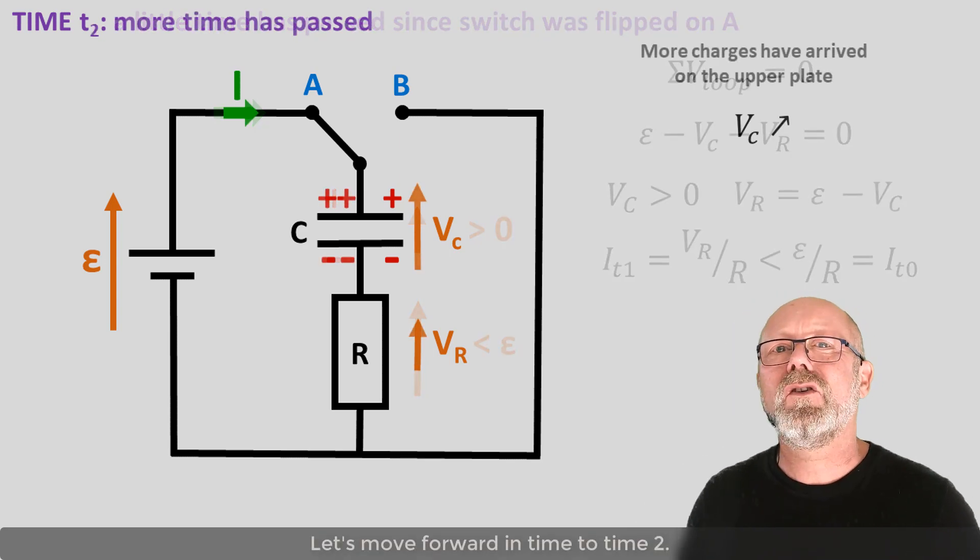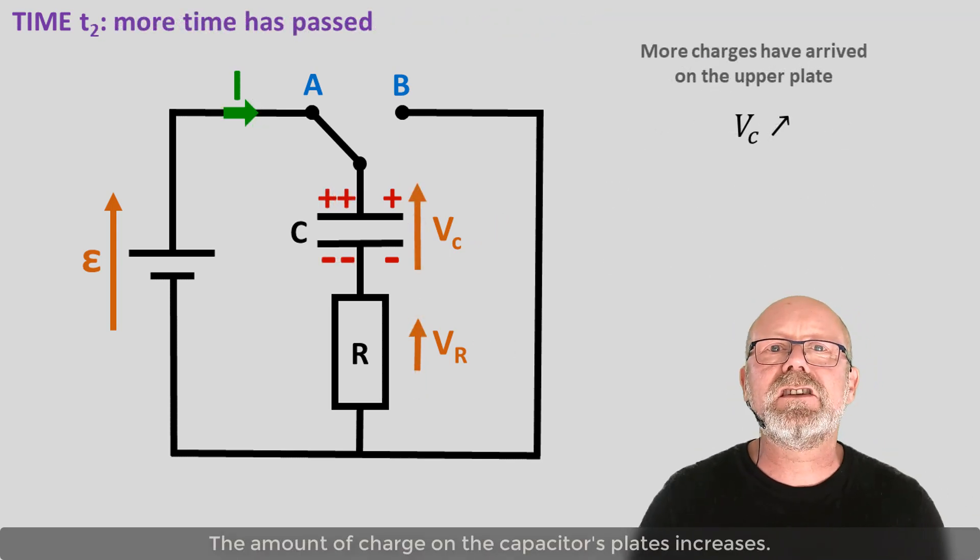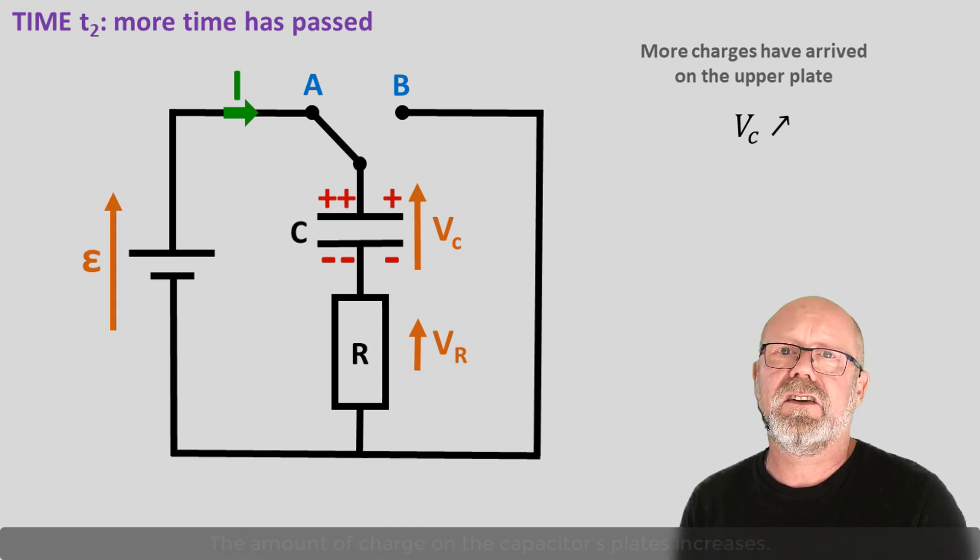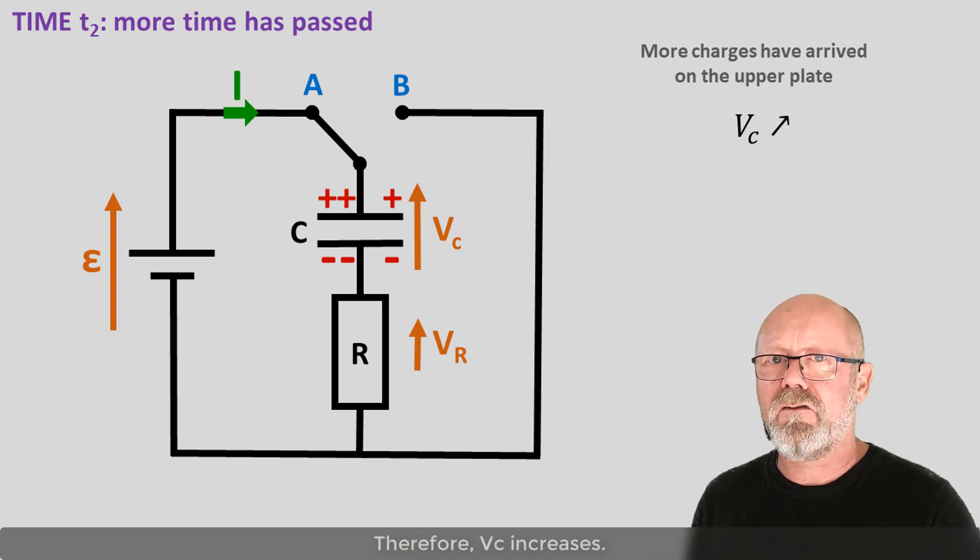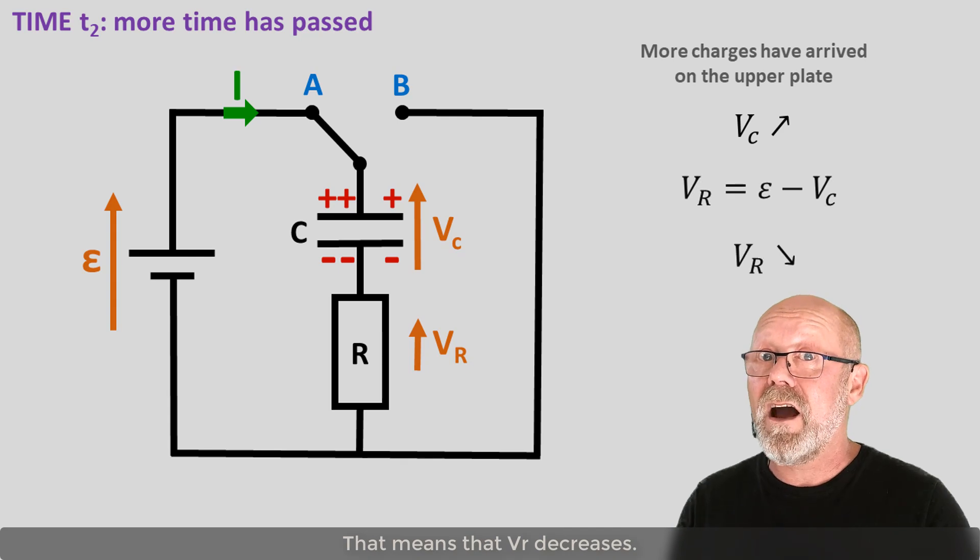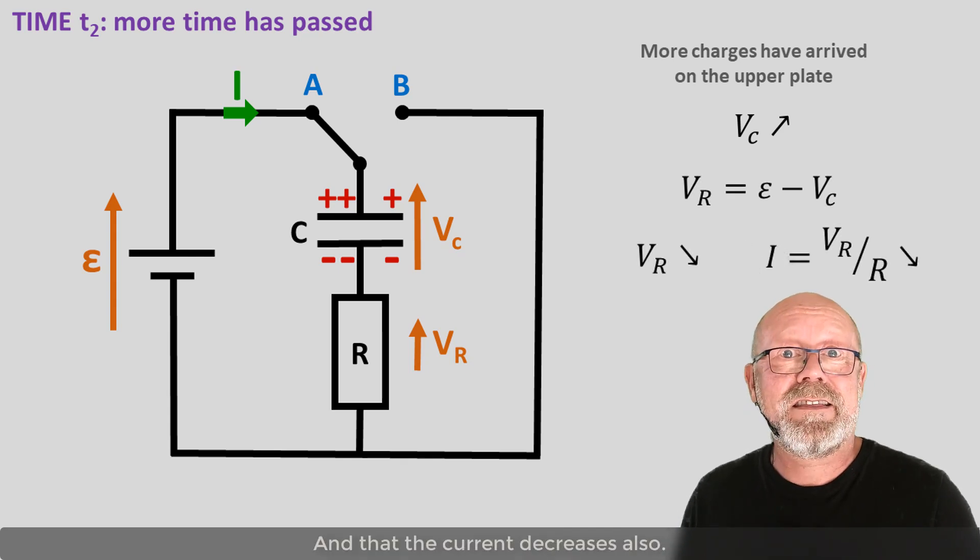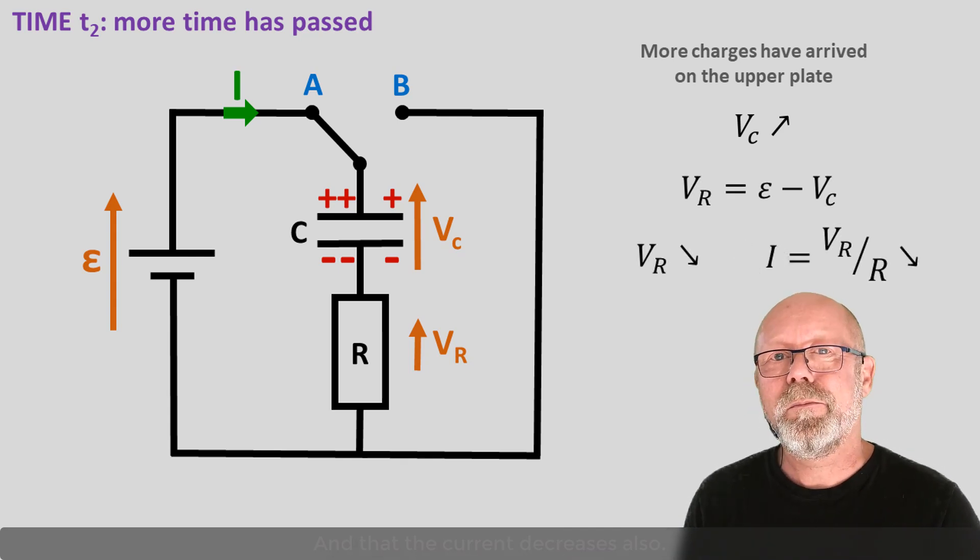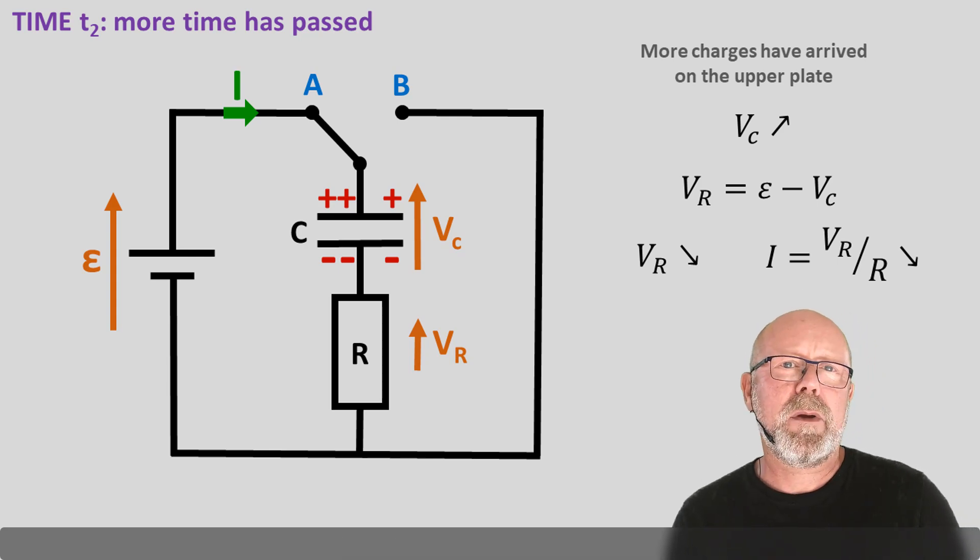Let's move forward in time to time 2. The amount of charges on the capacitor's plate increases. Therefore, Vc increases. That means that Vr decreases. And that the current decreases also.